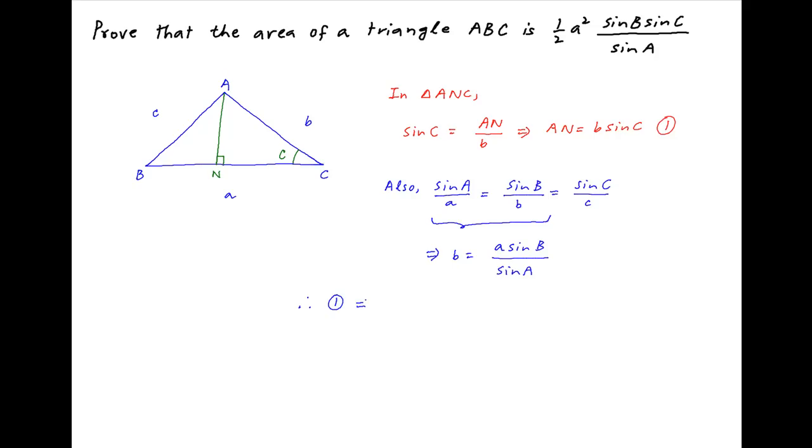Using this result in the expression for AN derived above, we get AN is equal to B sine C. Substituting the value of B, we get A sine B upon sine A times sine C.